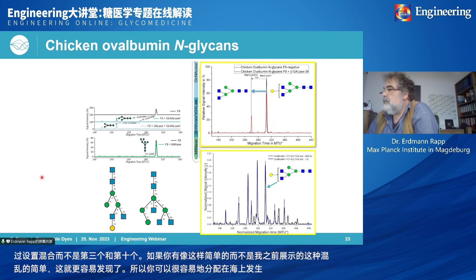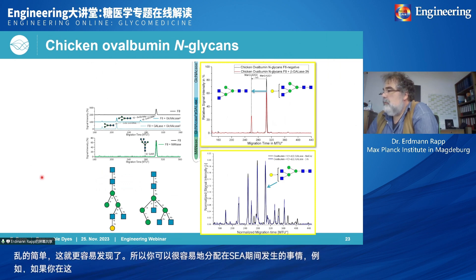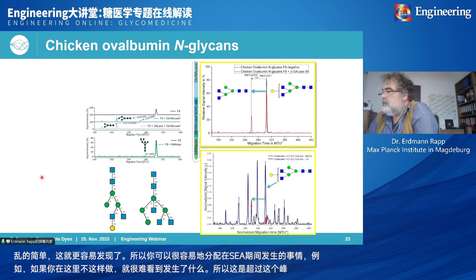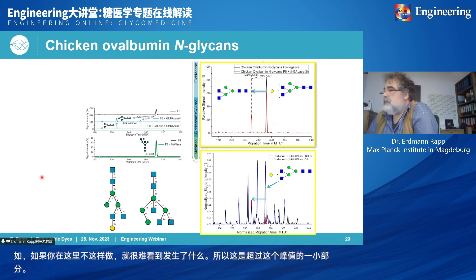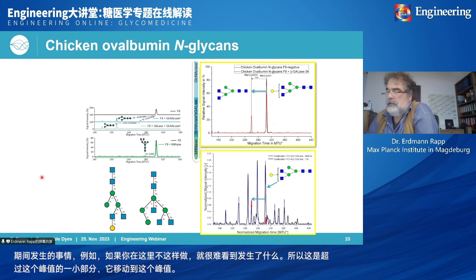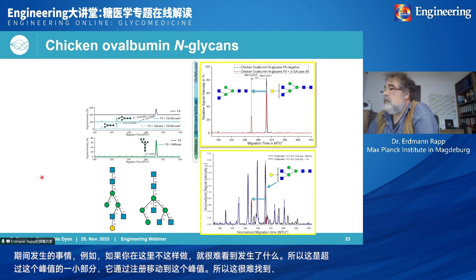If you don't fractionate, it is hard to see what happens — a tiny fraction under a peak moves to another position by digestion, and this is hard to find, especially when many other structures also shift.